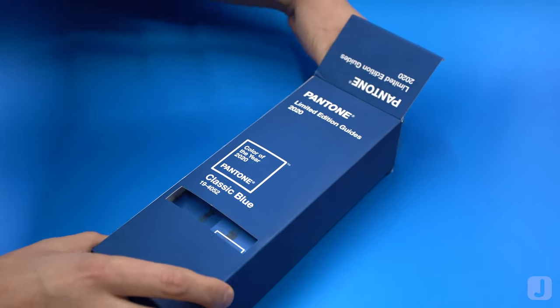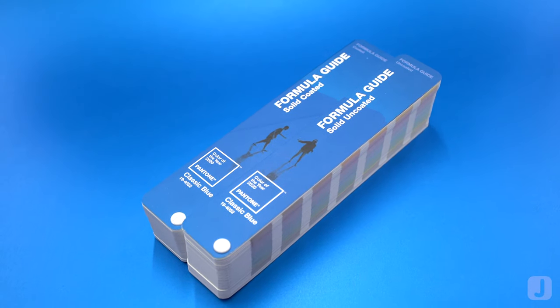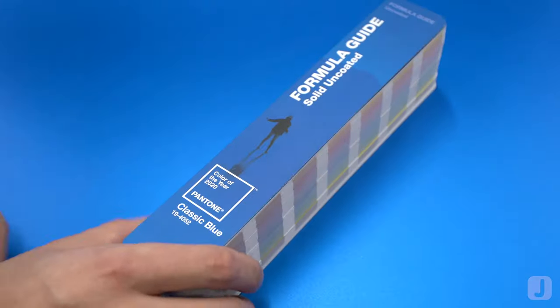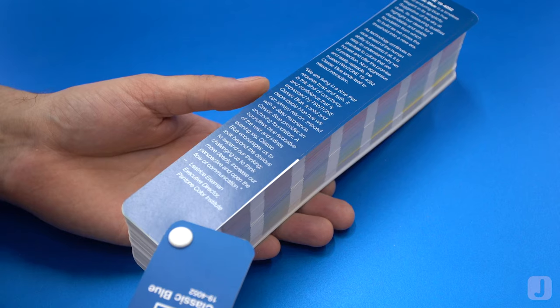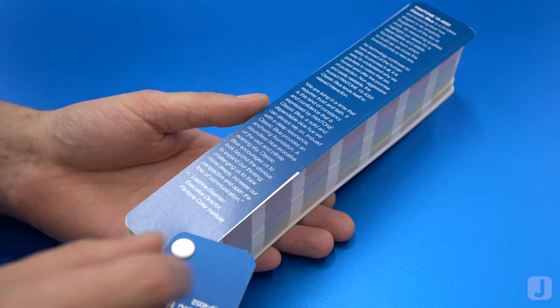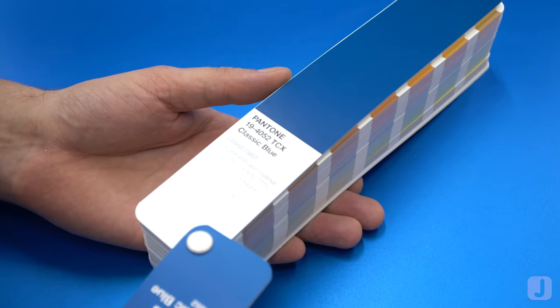Coinciding with this announcement is the release of this limited edition swatch book from Pantone. This newly updated formula guide features a few pages on the history of how the color of the year is decided, as well as highlighting classic blue with the related cross-reference codes for various industries.